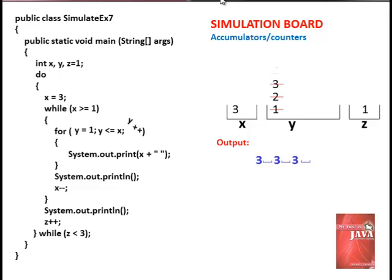Increment y as the for loop backs. Y is now 4. Is y less than or equal to x? Is 4 less than or equal to 3? False. The program escapes from the for loop. The cursor proceeds to the next line with the system.out.println statement. Decrement the value of x — x is now 2.